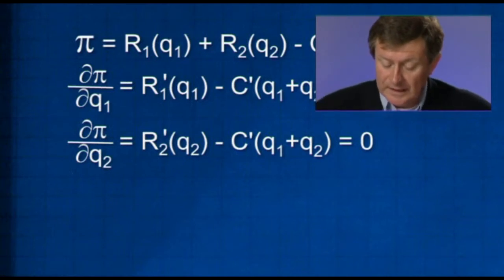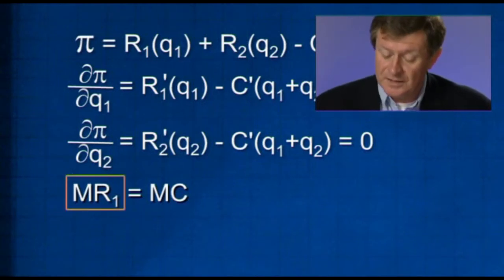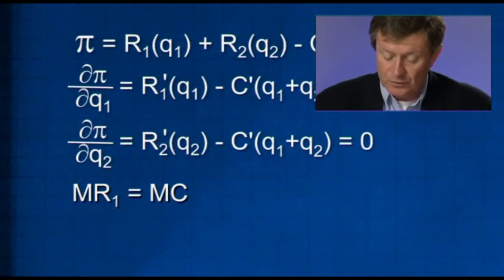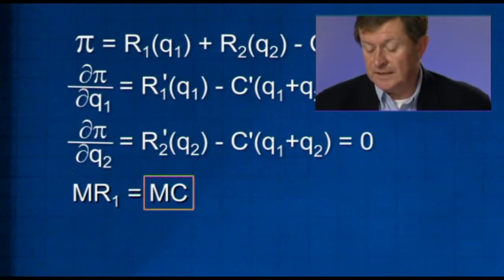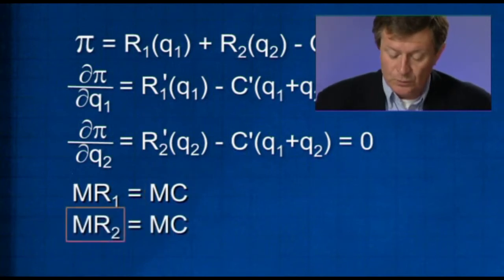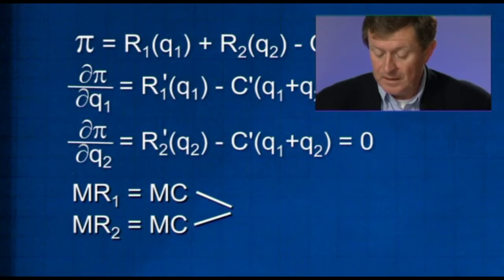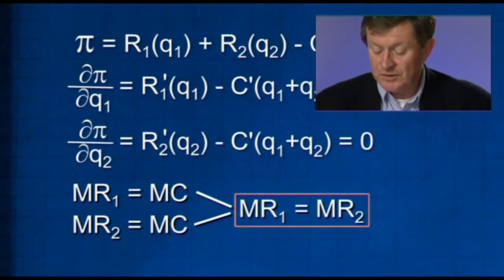Now, clearly, if we interpret the first term, MR1, that's R prime 1, that has to be equal to the marginal cost, which is the second term here, C prime, and MR2, that's the R2 prime, has also to be equal to marginal cost. So putting them together, MR1 must be equal to MR2.